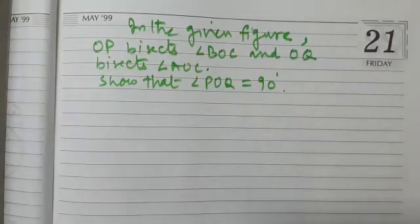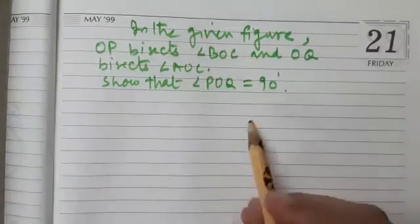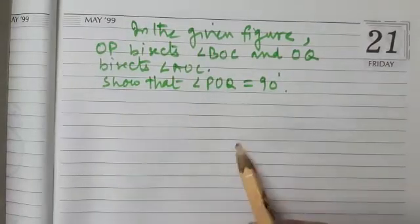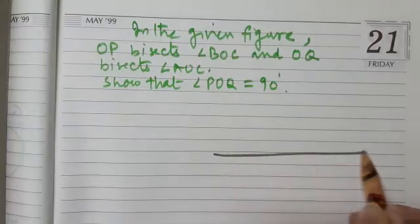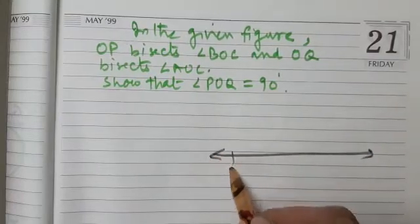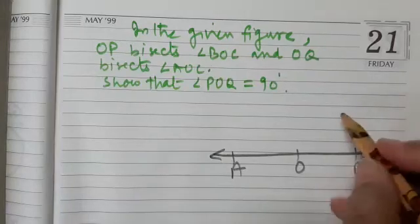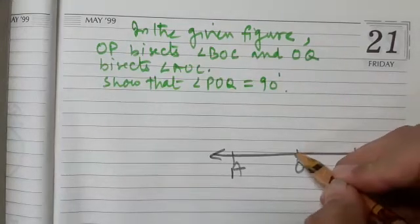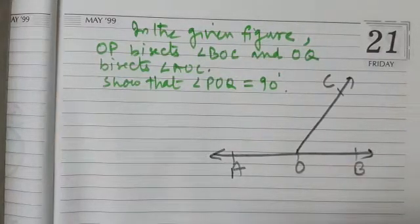Hello dear students, let us discuss this question from the chapter Lines and Angles. In the given figure, OP bisects angle BOC and OQ bisects angle AOC. Let me draw that — here AOB is a line, and we are given angle COB.